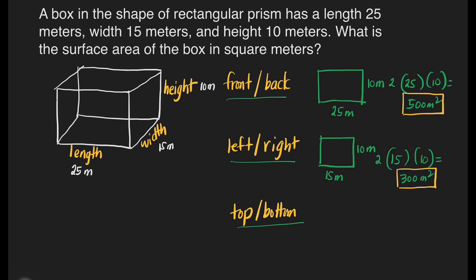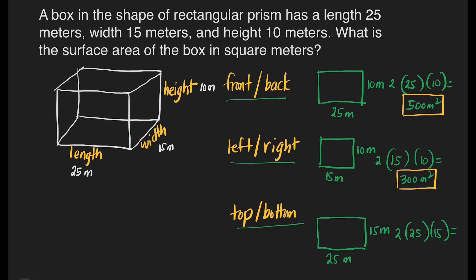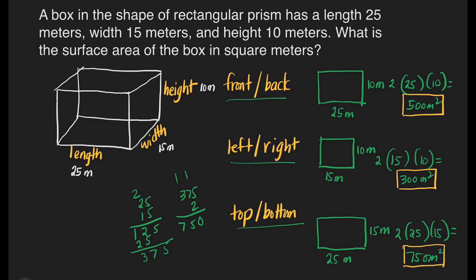Now let's move on to our top and bottom faces. It has a length of 25 meters and a width of 15 meters. That's going to be 25 times 15, then times 2 because we have 2 faces — the top and the bottom. 25 times 15: 5 times 5 is 25, carry 2; 5 times 2 is 10, plus 2 is 12; 1 times 5 is 5; 1 times 2 is 2; adding gives 375. 375 times 2 is 750 meters squared. This is for our top and bottom faces.